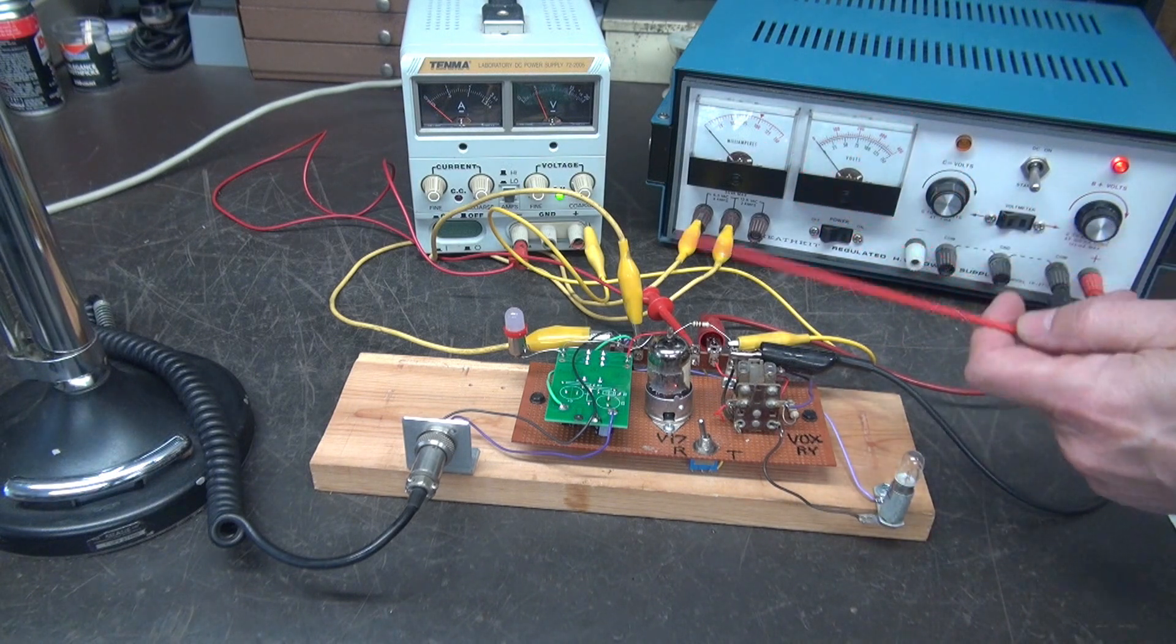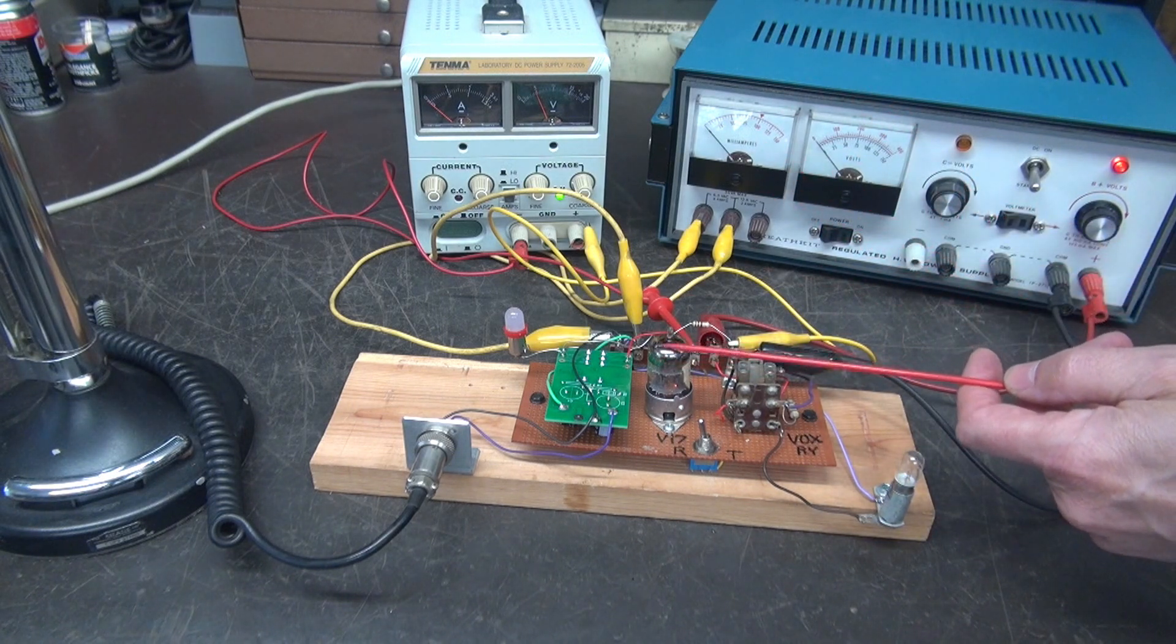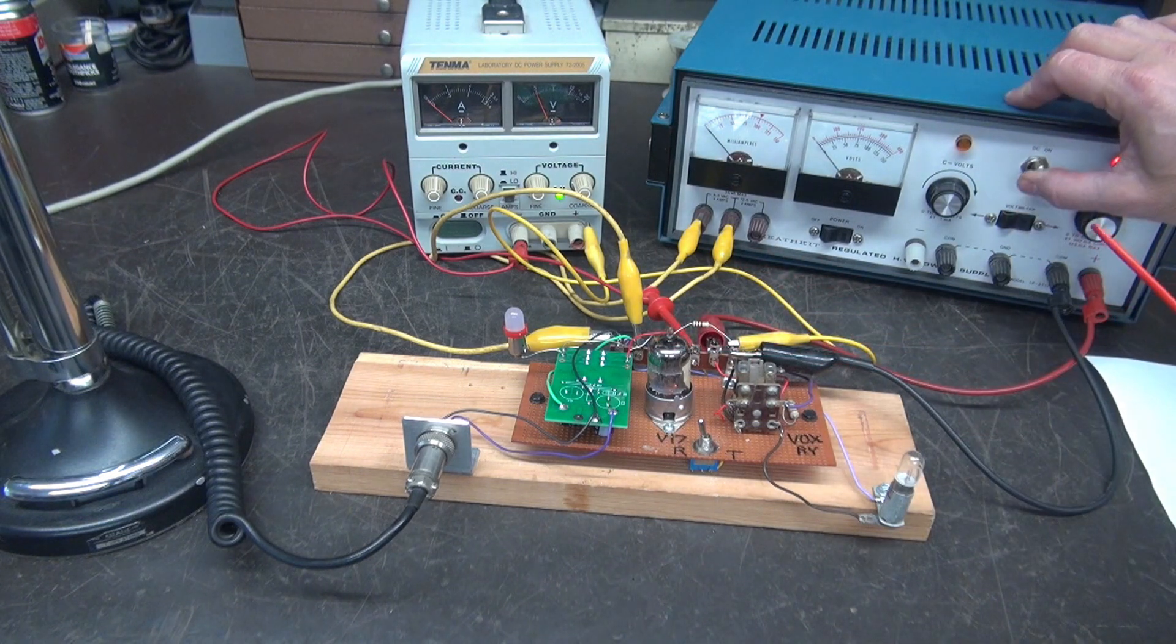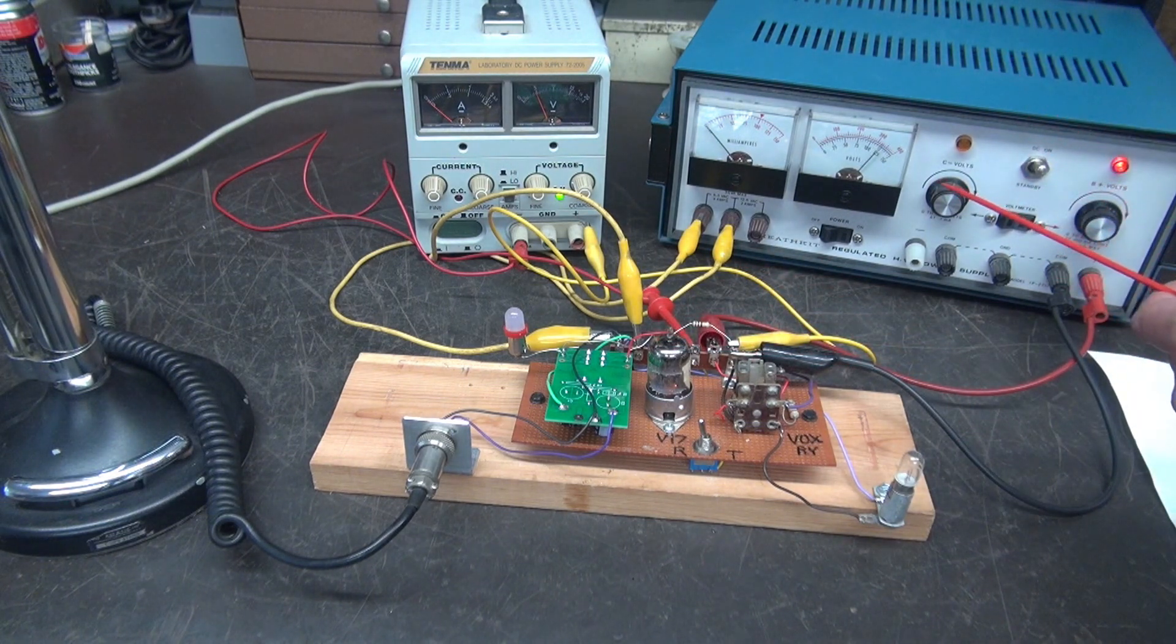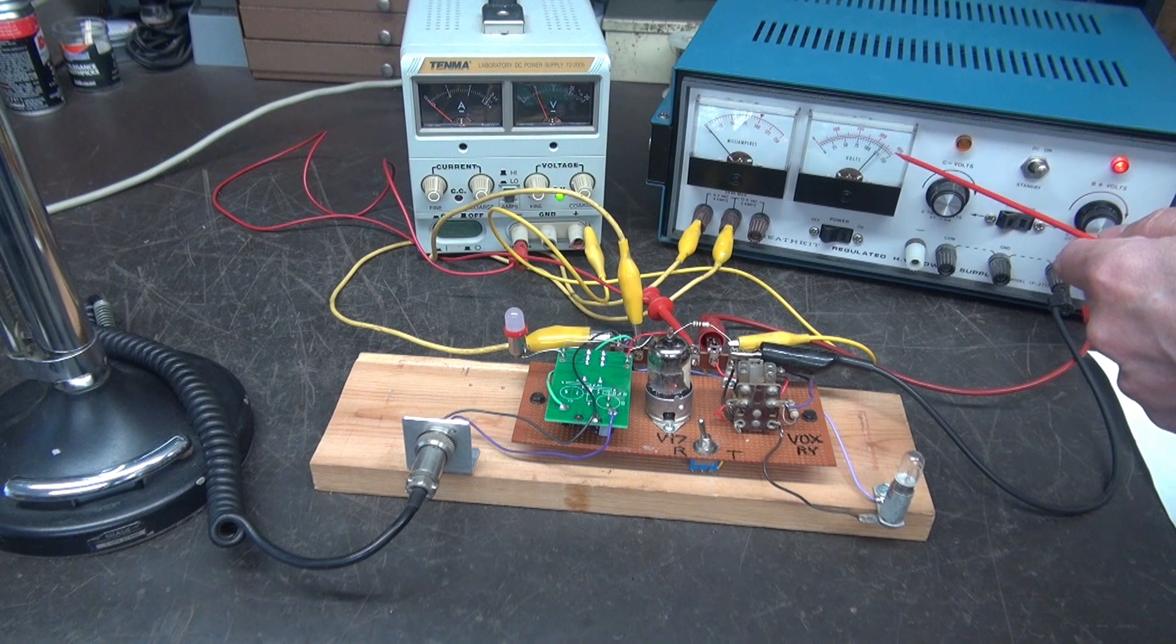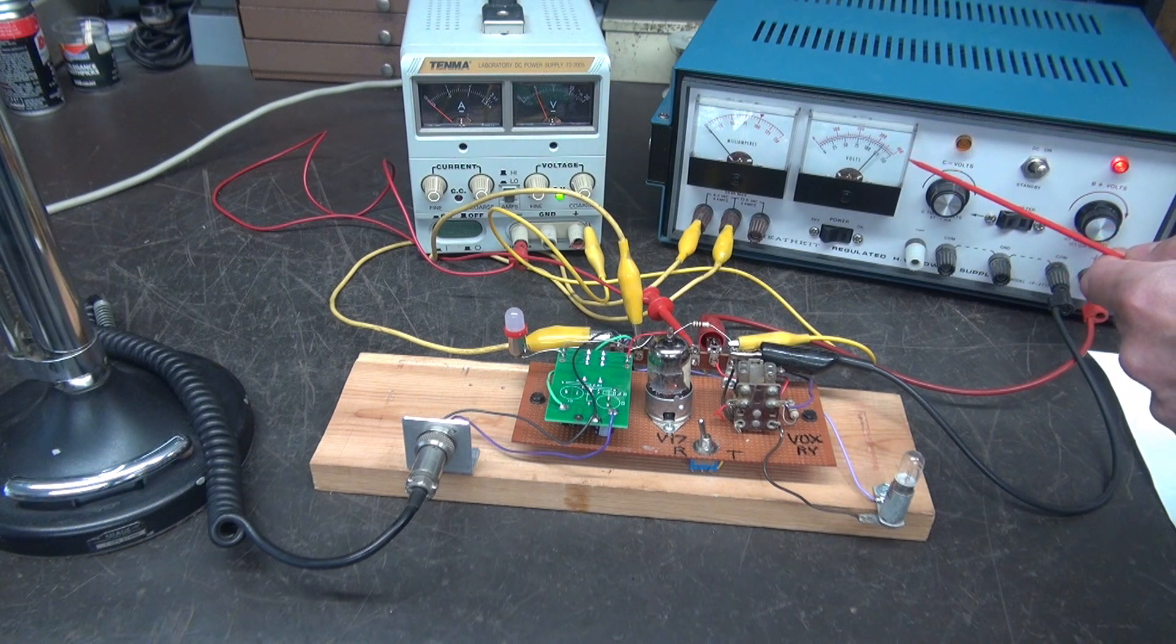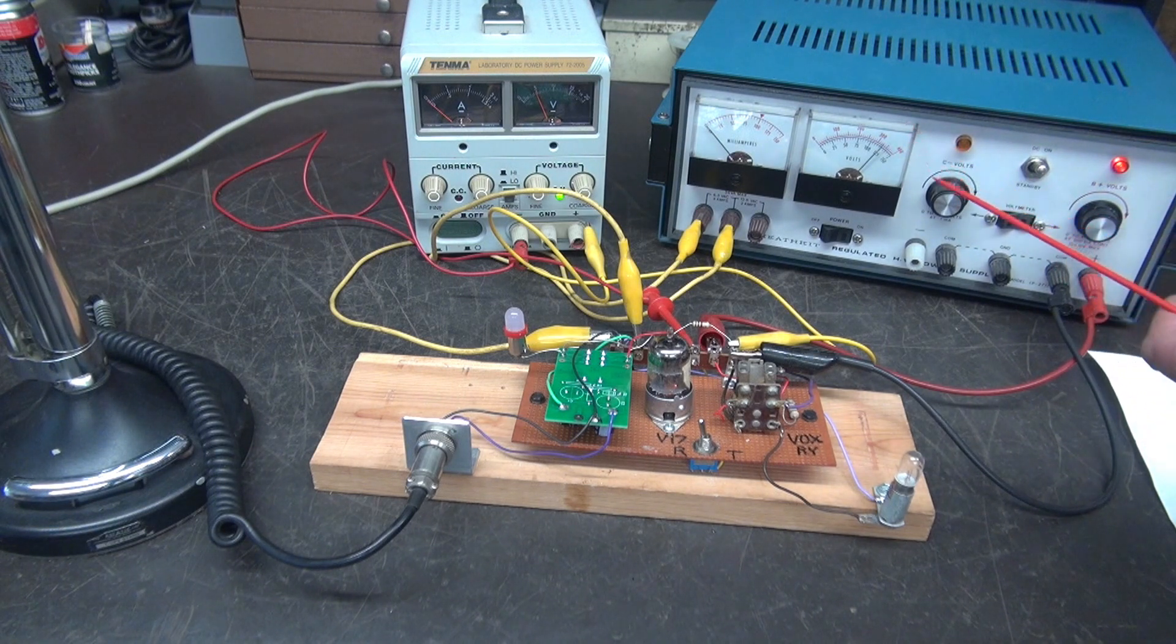My power supply generates filament voltage so the 12AT7 is already fired up and we need to turn on a higher voltage. So I'm a little over 300 volts and that's what you'll also find in the HT32.